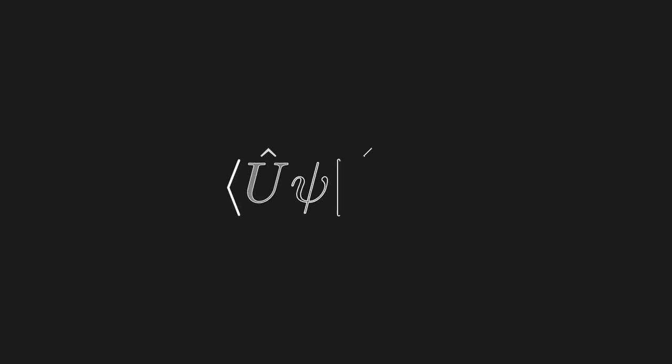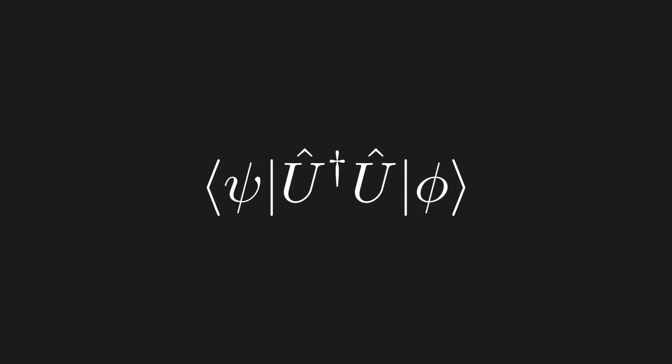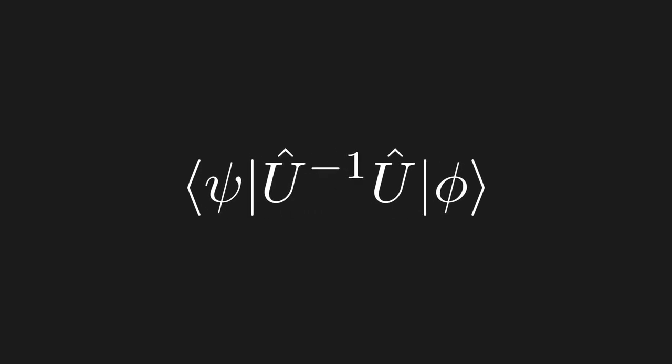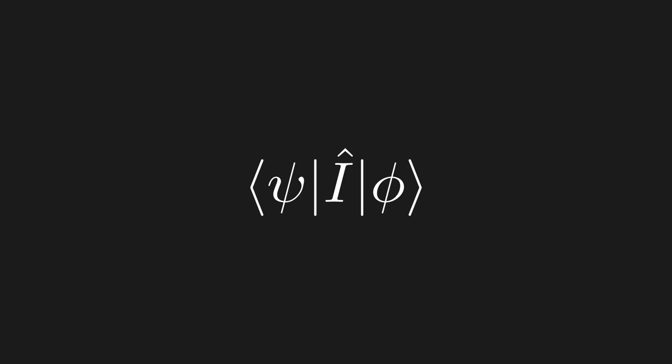Let's start with an inner product and apply u to both vectors. Let's then pull out the right operator. If we want to switch the left operator to act on the right, remember that we just use the Hermitian conjugate. The Hermitian conjugate is equal to the inverse. Hence, we get u times its inverse, which by definition must equal the identity. Hence, the inner product is equal to its original value.